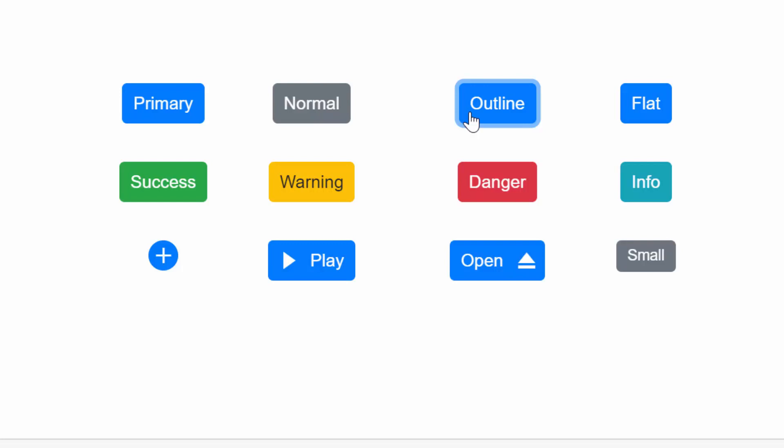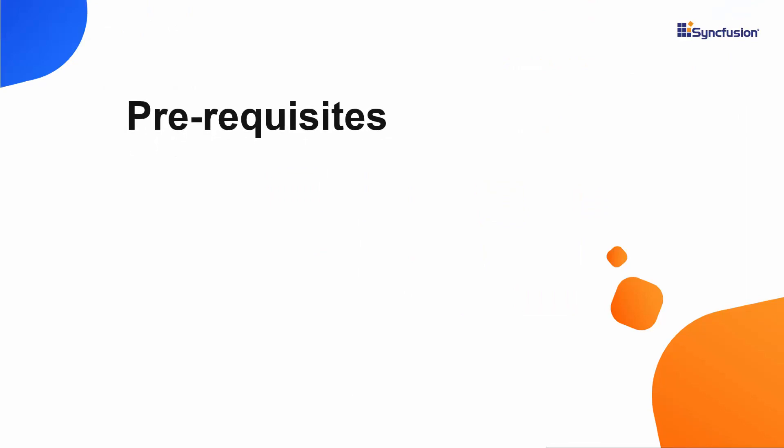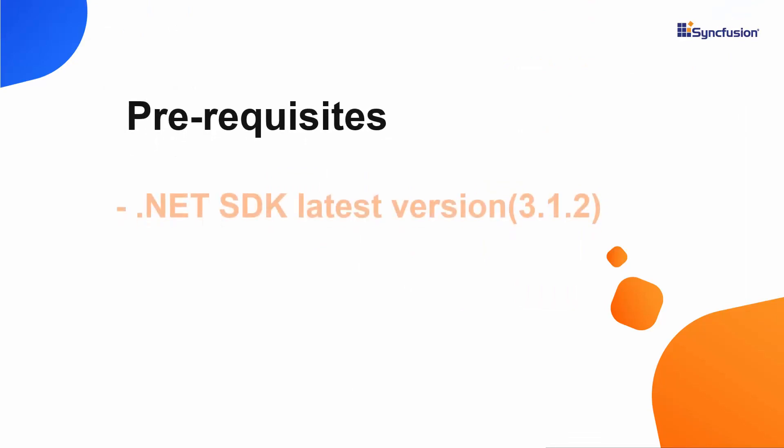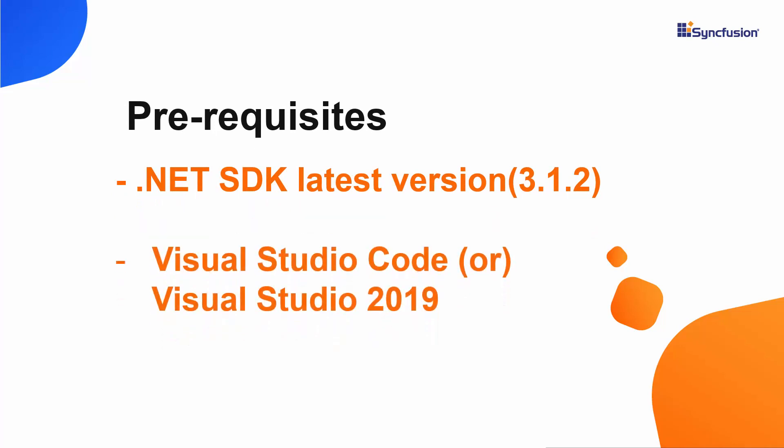Now I will proceed to show you how to add the button component to a Blazor server app using Visual Studio 2019. Before I start to create the Blazor application, first I need to make sure whether the .NET Core SDK latest version is installed in my machine, and I should have Visual Studio Code or Visual Studio 2019 to create a Blazor application.